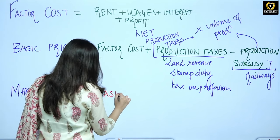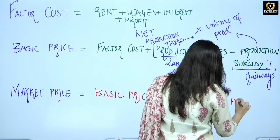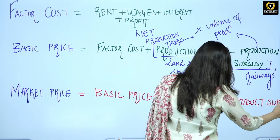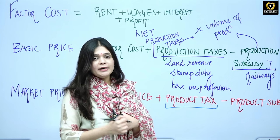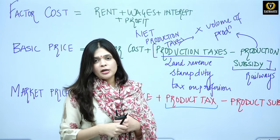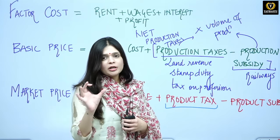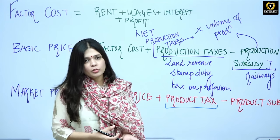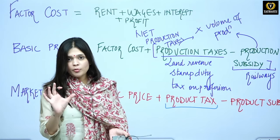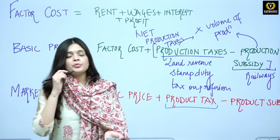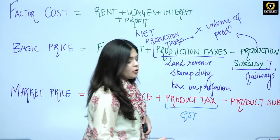Market price is basic price plus product tax minus product subsidy. Product tax depends upon the volume of production. Market price is what you see as MRP — maximum retail price — printed on every packet you buy. As a consumer, whatever price exists in the market is the market price. For example, in a restaurant, the amount of dishes you order determines the tax you pay — so the tax depends on the volume of production. The difference is: production taxes do not depend on volume; product taxes do. Examples of product tax are GST and excise duty.